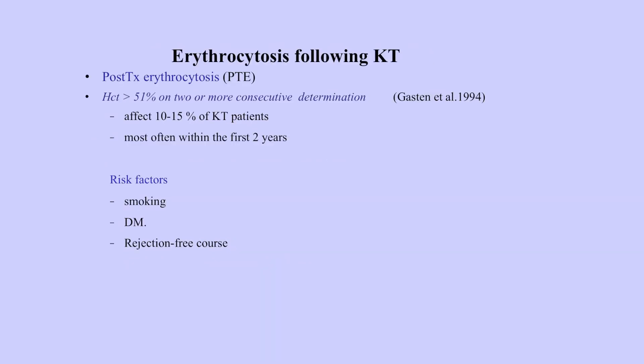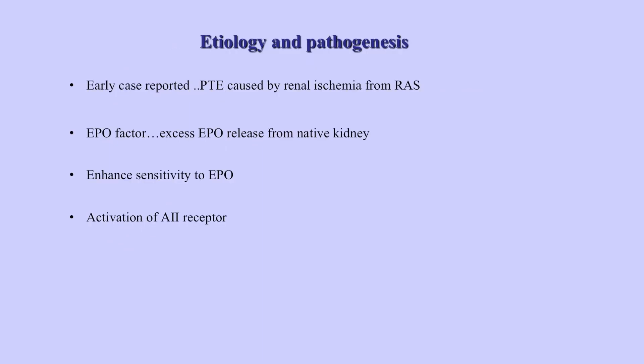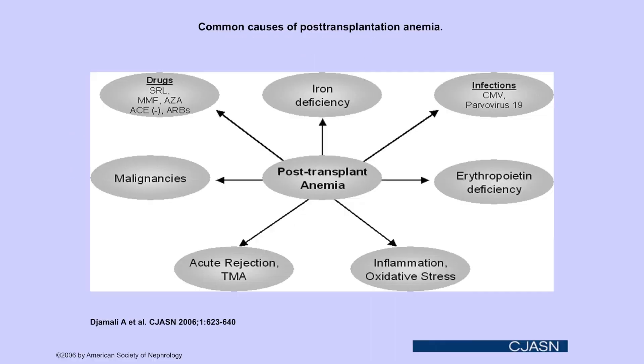Post-transplant erythrocytosis — we've all seen those in clinic. Hematocrit more than 51% on two or more consecutive determinations. Generally you see it early on in the first two years. The etiology is thought to be excess EPO release from the native kidney, or in some cases enhanced sensitivity to EPO and activation of the angiotensin 2 receptor. For treatment, we do phlebotomies and give ACE or ARB inhibitors.